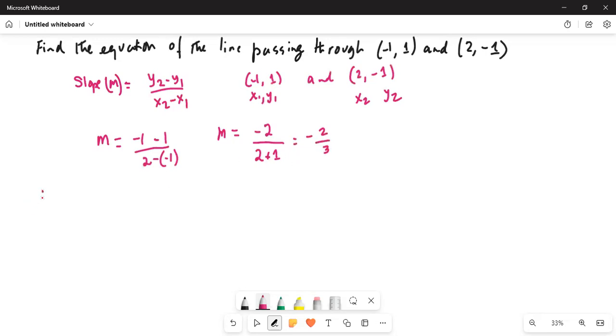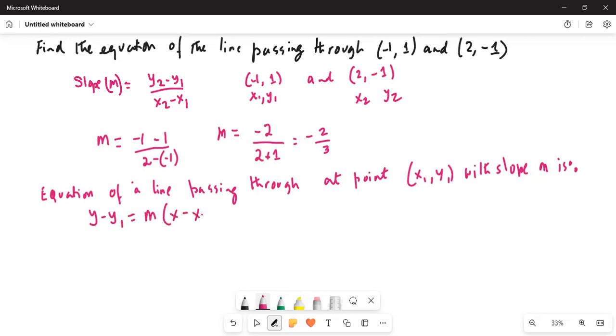Now the equation of a line passing through a point (x1, y1) with slope m is y minus y1 equals m times (x minus x1).